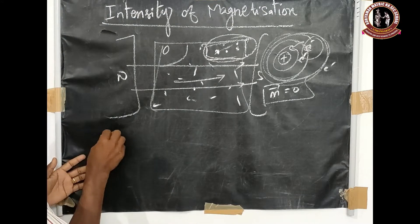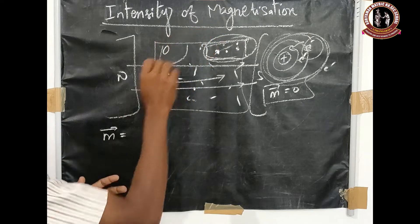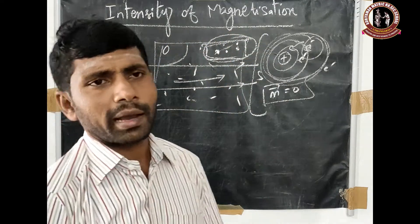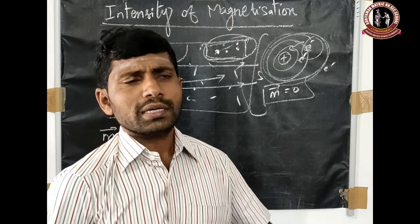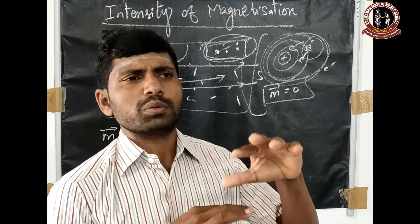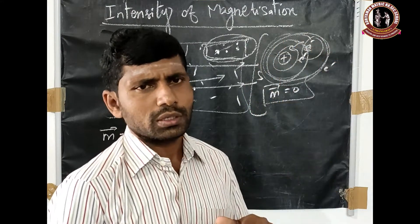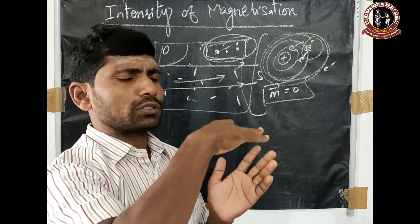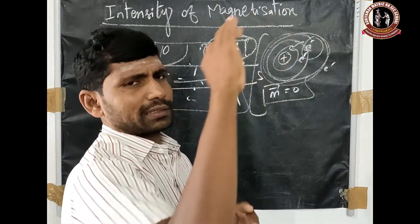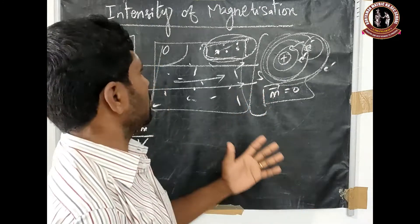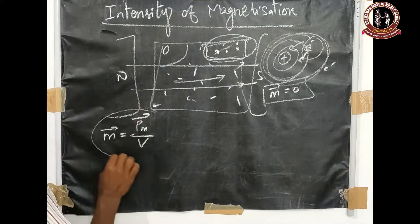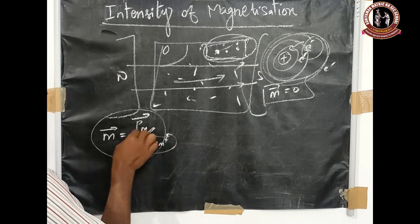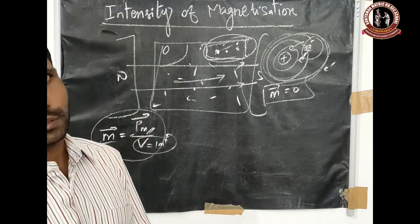The intensity of magnetization is defined as magnetic moment per unit volume. Without an external magnetic field, the dipoles are in random motion, so the net dipole moment is zero. When placed in an external magnetic field, all atomic dipoles are partially or fully aligned, and the net magnetic moment per unit volume is called the intensity of magnetization (M vector).